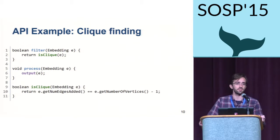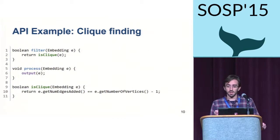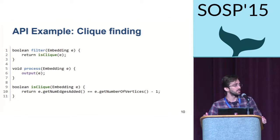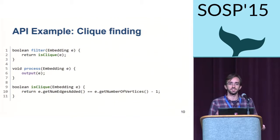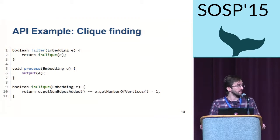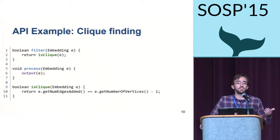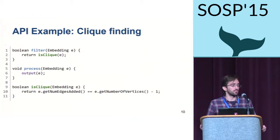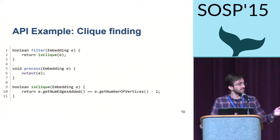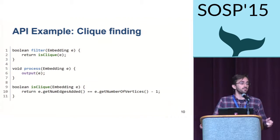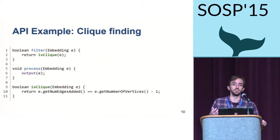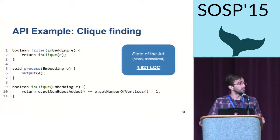One of the key contributions of Arabesque is precisely this API — these abstractions that handle all the common cases in graph mining algorithms. Using our Think Like an Embedding approach, the user simply states which subgraphs they are interested in. In this case, all subgraphs that return true when applied to the isClique function. For each subgraph, the user specifies what to do with them — here, simply output to disk. In just 11 lines of code, we have a very efficient and distributable implementation of clique finding. For comparison, MACE, a state-of-the-art implementation, requires more than 4,000 lines of code to achieve the same thing in a centralized manner.